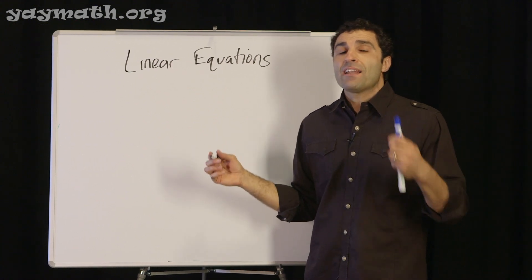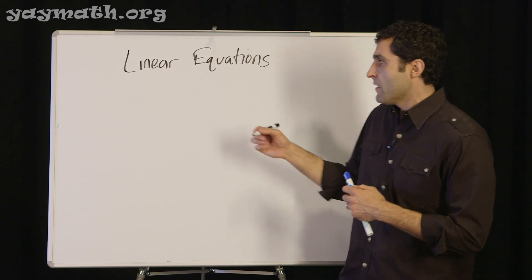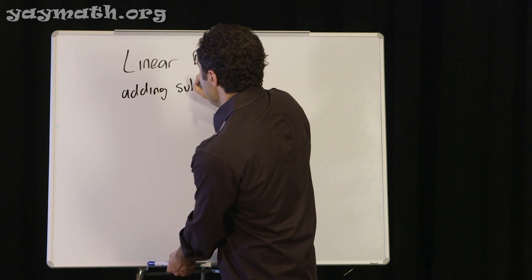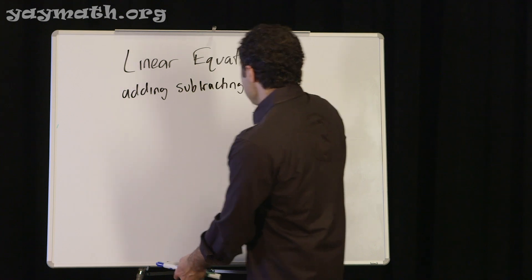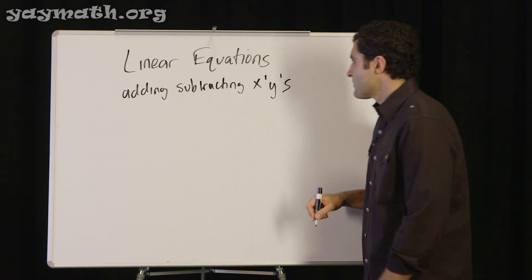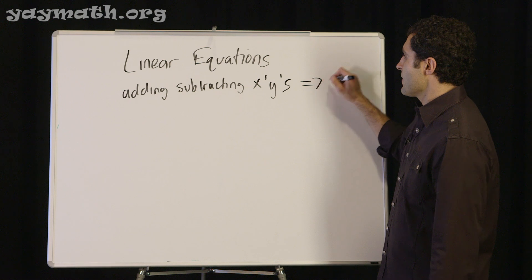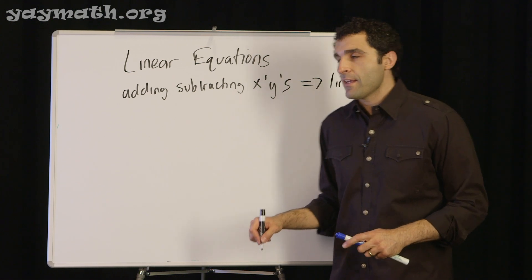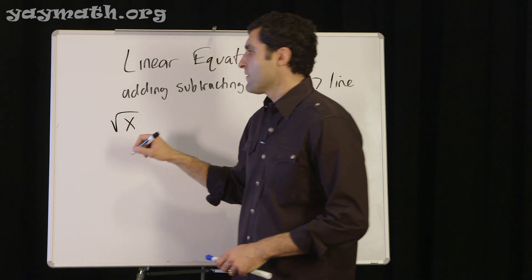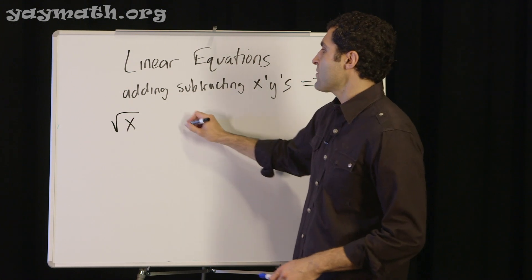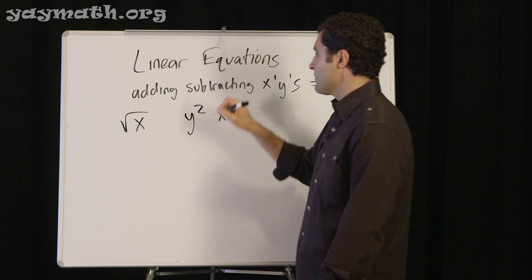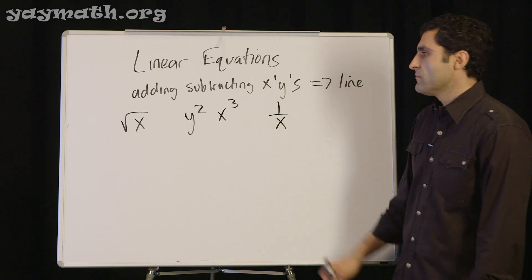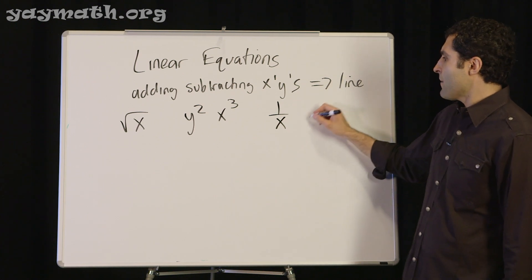The first question is: how do you spot a line when you see it? Basically, the rule is if you're adding or subtracting x's and y's, it's a line. If you do any funny business, it's no longer a line. So if you see square root of x — not a line. If you see y squared, x squared, x cubed — not a line. If you see one over x — not a line.